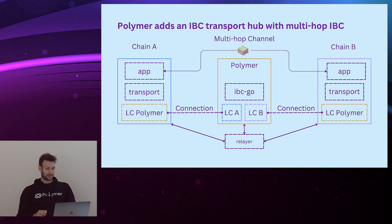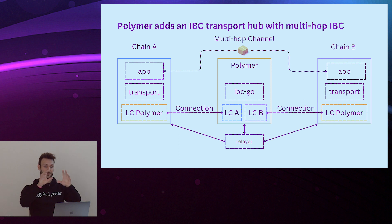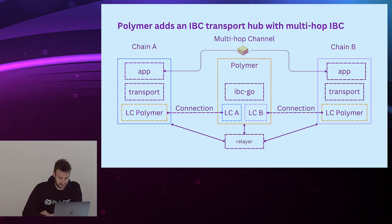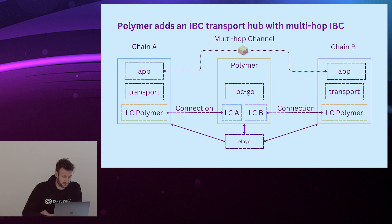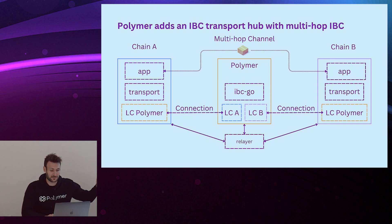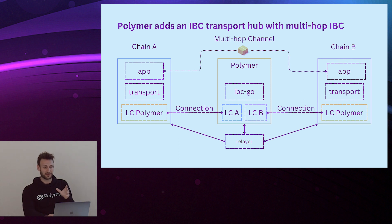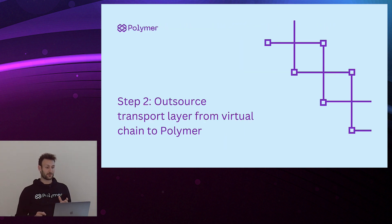The full picture is: Polymer is in between and it still enables chain A and chain B to have a channel between them — it just uses Polymer as a facilitator. Now you might ask: why does Polymer have to be in the middle? This brings us to step two: outsourcing the transport layer to what we call a virtual chain.